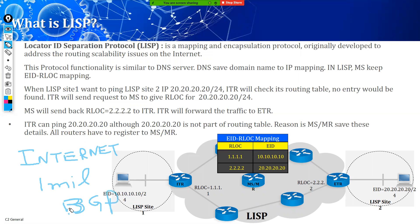One million routes are too many even for a powerful router to process. We don't want to increase this to 5 million — if the routing table size goes to 5 million it would be very difficult even for backbone routers to process. Tier 1, tier 2, and tier 3 ISPs would need to upgrade their routers and invest millions of dollars. LISP is a protocol that helps keep the routing table size small.